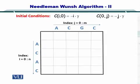The initial condition for computing the matrix is that C i0, that is the entire vertical column, is equal to the index multiplied by the gap penalty. So we can have a gap penalty depending on our choice and therefore it is represented here as a variable gamma. So let's start filling it.